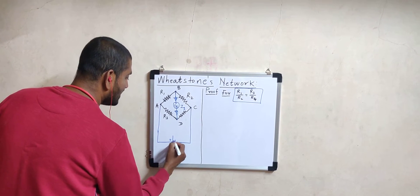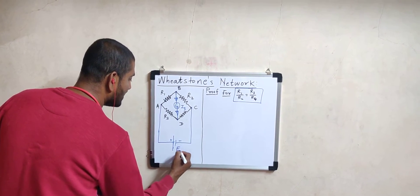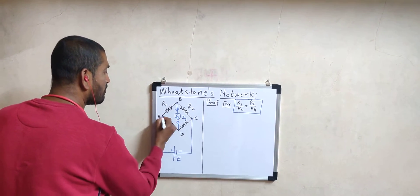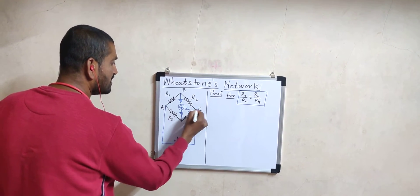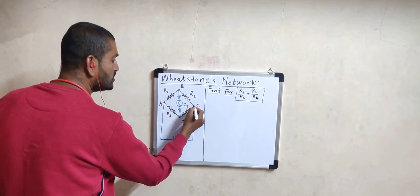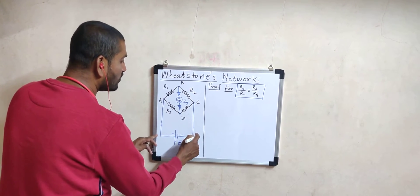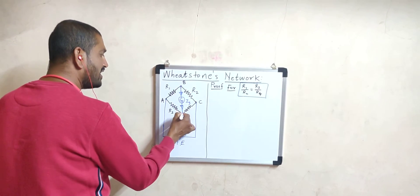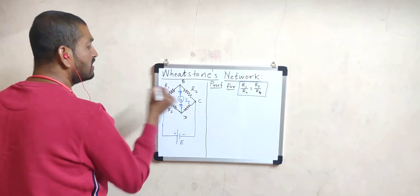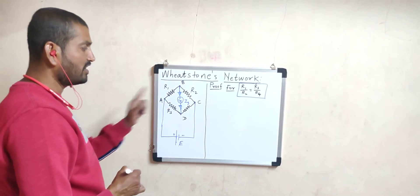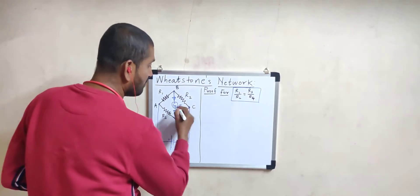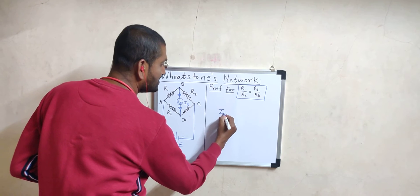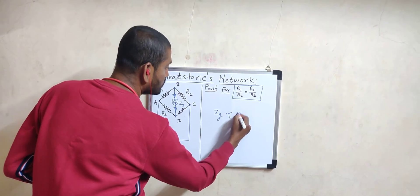A cell of certain EMF is connected between these two diagonally opposite junction points along diagonal AC. Between the two remaining diagonally opposite junction points, a highly sensitive galvanometer is connected. Remember, a galvanometer works on the principle that IG is proportional to the deflection angle θ — if deflection exists, current exists; no deflection means no current.